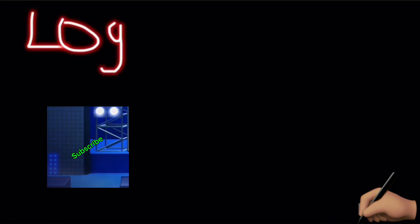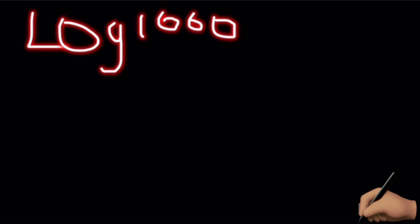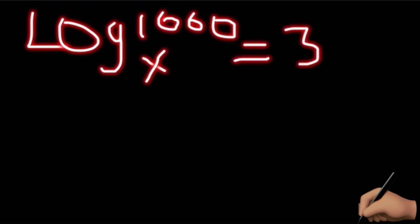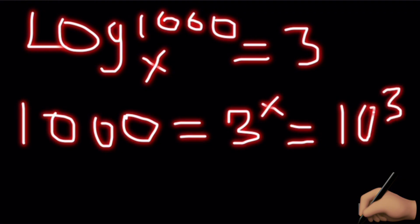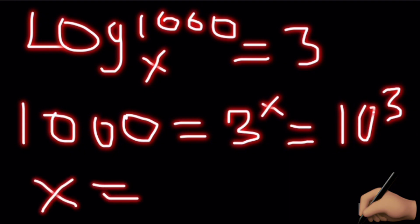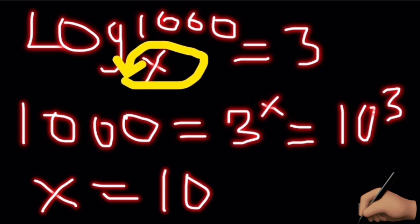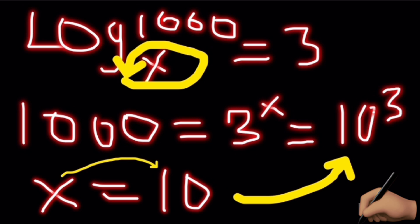The next question: log base x of 1000 equals 3. We express this as 1000 equals x to the power 3. Now, 1000 is equal to 10 to the power 3, so our x is equal to 10. If we put 10 where the x is, we get 3 — it is just that simple.